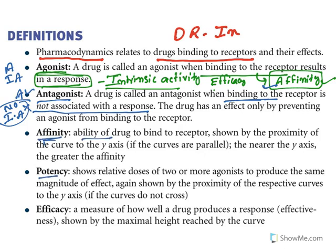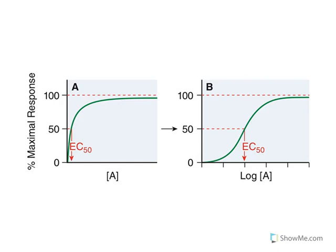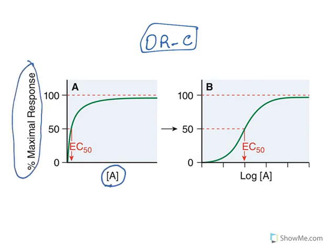Affinity is the binding ability. Potency is a term which describes how the dose exerts a response — we will see this with respect to the dose-response curve. Similarly, we will see efficacy with respect to graphs. Now look at this simple dose-response curve: the dose of the drug is on the x-axis whereas the response is on the y-axis. When you increase the dose, the response increases in this manner.